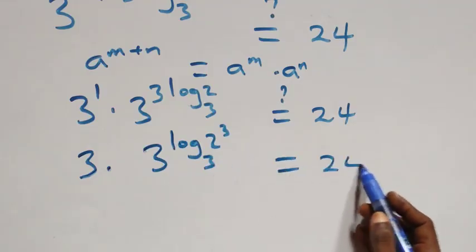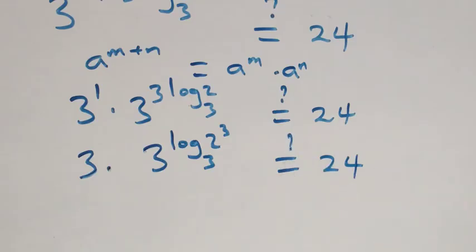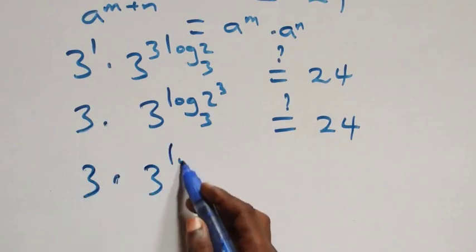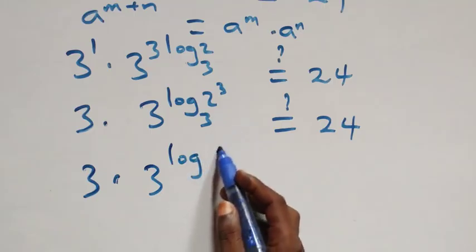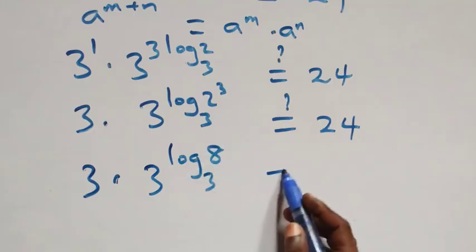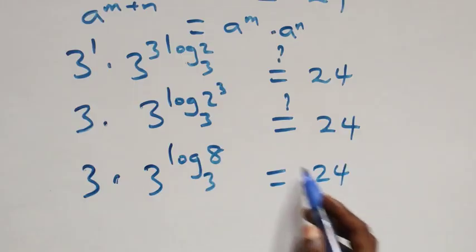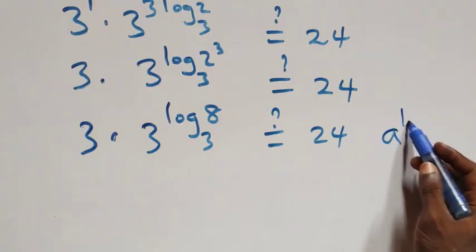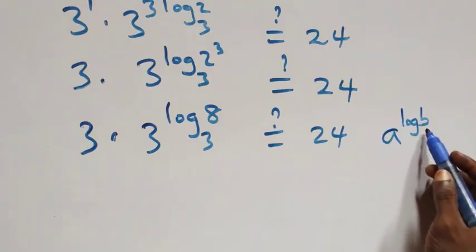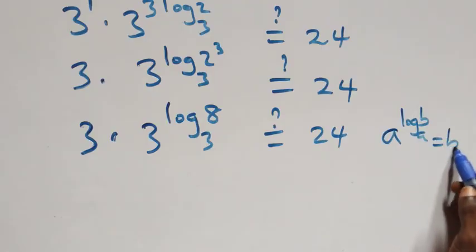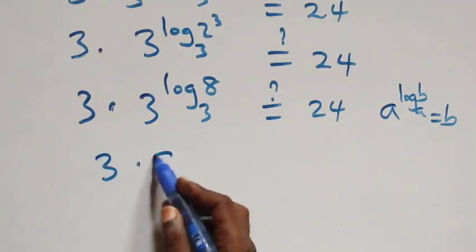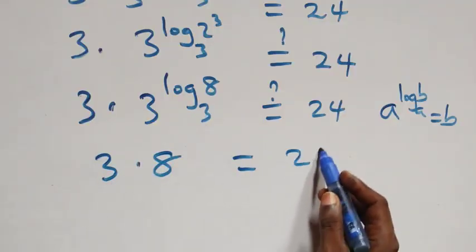Is this equal to 24 on this side? Now 3 raised to power 1 is the same as 3. Then we reverse: 3 raised to power (3 log₃2) becomes 3 times 3 raised to power log(2³) to base 3, which equals 3 raised to power log 8 to base 3. This follows since a raised to power log b to base a equals b — so we have 3 times 8.